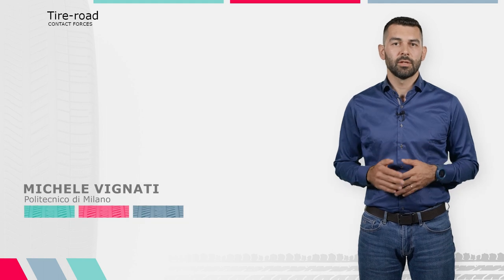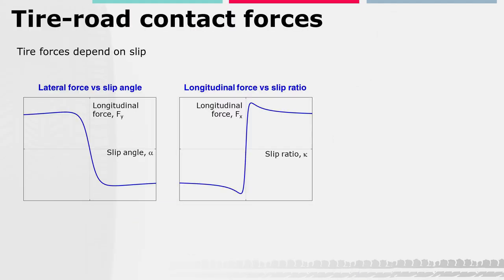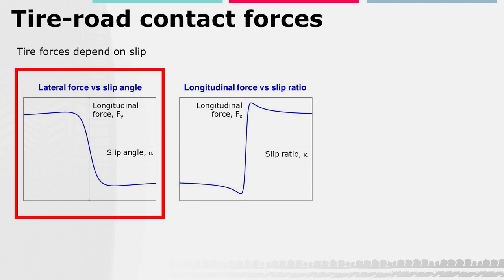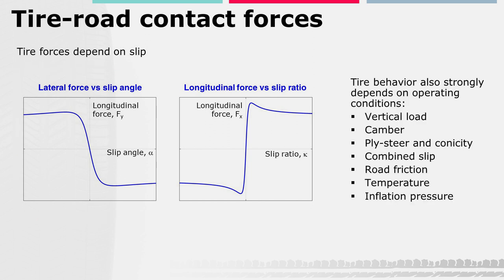We introduced that the tire-road contact forces depend on slip. The longitudinal force Fx depends on the slip ratio K, while the lateral force Fy depends on the slip angle α. However, the tire behavior also strongly depends on operating conditions such as vertical load, camber angle, and ply steer and conicity.